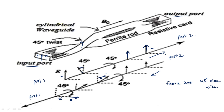This is the actual operation of the isolator for signal transmission from port 1 to port 2 and from port 2 to port 1. In the next video, I will explain the scattering parameters of this isolator. Thank you.